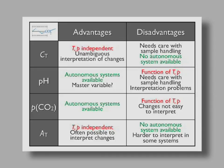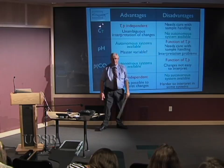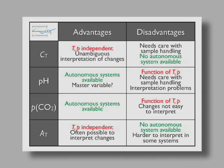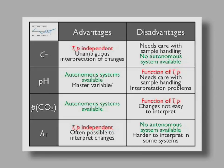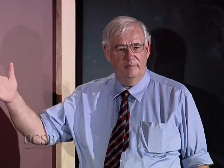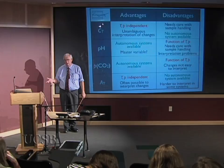For PCO2, the biggest advantage is that autonomous systems are available. Again, it's a function of temperature and pressure, so you really want to measure it directly in your tank. Changes are not easy to interpret: if the PCO2 changes, think back to that picture of PCO2 versus carbonate ion concentration — just changing the PCO2 doesn't tell you very much. You might say you could measure pH and PCO2 autonomously, and yes you could, but as we'll see, that's not so desirable.